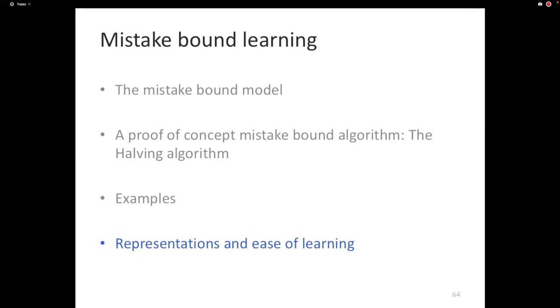The halving algorithm makes order of log of the number of concepts number of mistakes, so it cannot make more than those many mistakes. And I also said that halving is optimal, which means no other algorithm for a Boolean function can make fewer mistakes than the halving algorithm. So that gives us an important tool, because if we need to find what's the best possible number of mistakes that any mistake-driven algorithm can make on a certain class of Boolean, on a discrete class of function, we don't have to think too hard. Just apply the halving bound and you know that it's order of that much.